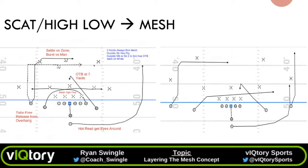We had a question about Mesh out of empty and three-by-one. So the base rule is the two inside guys are the meshers. You can do different tags — like a switch tag where the outside receiver runs the mesh instead of the inside guy. If you want to go empty and motion that back out wide, rather than having him run the wheel primarily into the boundary, you can motion him out. That's a good ID indicator for zone versus man — if a linebacker walks all the way out to cover number one, that's a good indicator they're in man coverage.